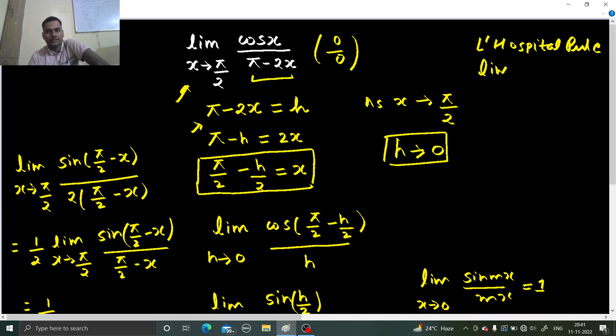Limit x tending to pi by 2. We can differentiate numerator and denominator separately. Derivative cos x is minus sin x. Derivative pi minus 2x is minus 2. At x tending to pi by 2, sin pi by 2 is 1. So you get 1 by 2 as your answer from here.